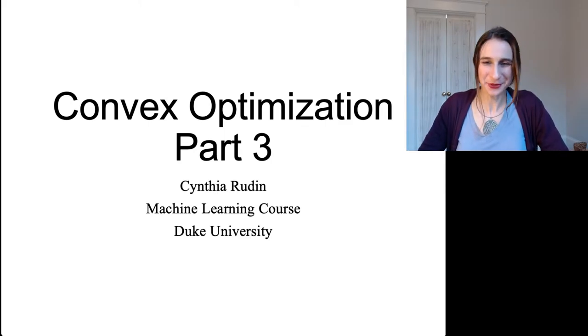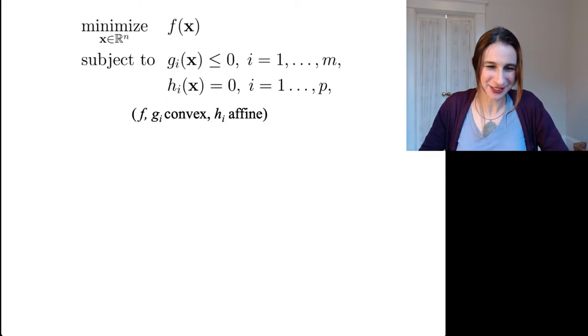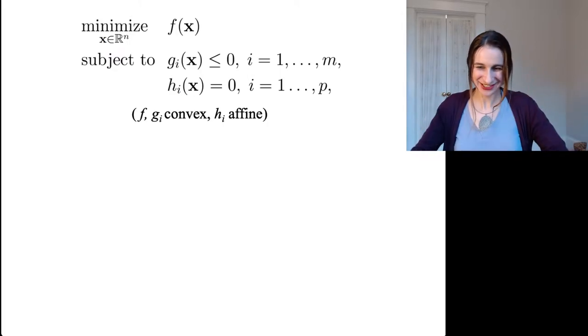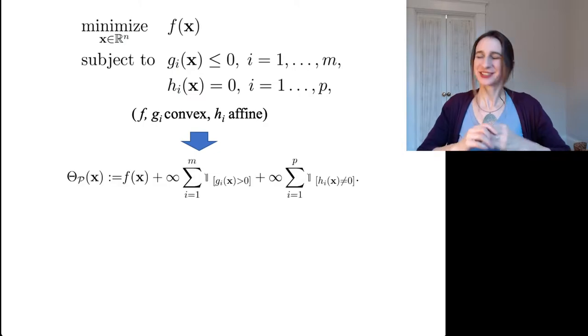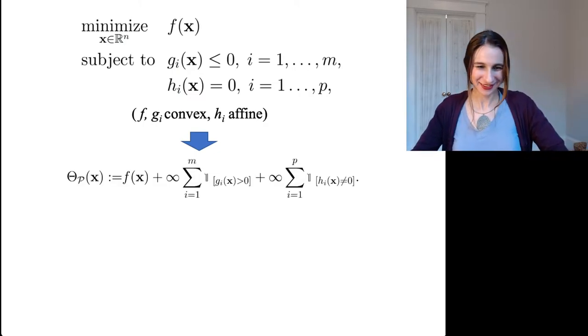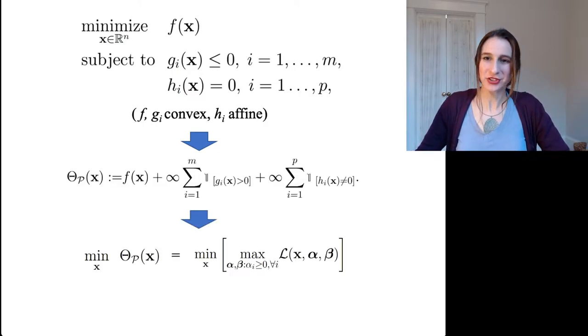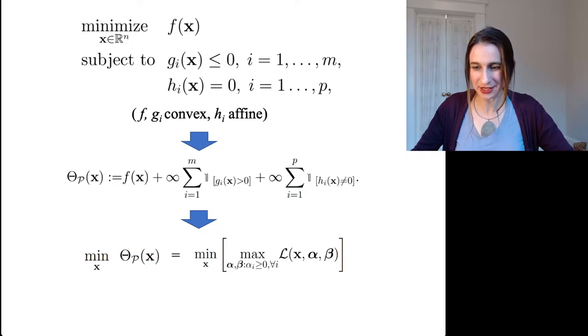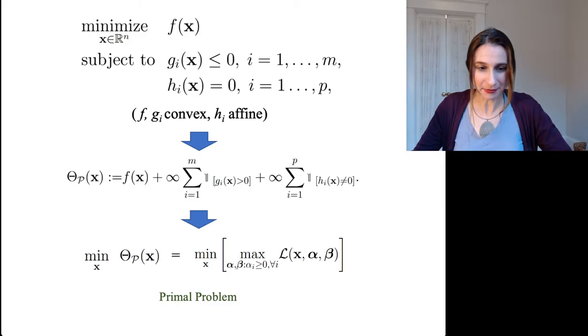Okay, convex optimization part three. This is the short one, I promise. So we started with this optimization problem. Here it is again. We changed it to look like this beautiful primal. Then we realized that actually you can write this as the maximum of the Lagrangian with respect to the dual variables alpha and beta. How cool is that? And that is again, that's the primal problem.